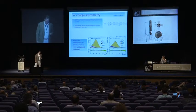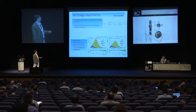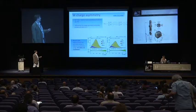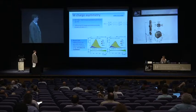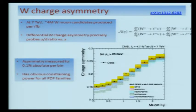One step along that road is improving PDFs via precise measurement of the charge asymmetry in W production. With millions of events available, we can precisely measure the differential charge asymmetry as a function of lepton rapidity, which probes the up-to-down quark valence PDF ratio as a function of parton x. A recent CMS measurement used 20 million W candidates with a very precise missing-energy model, measuring the asymmetry to 0.1% precision as a function of lepton rapidity, showing clear constraining power for all PDFs.